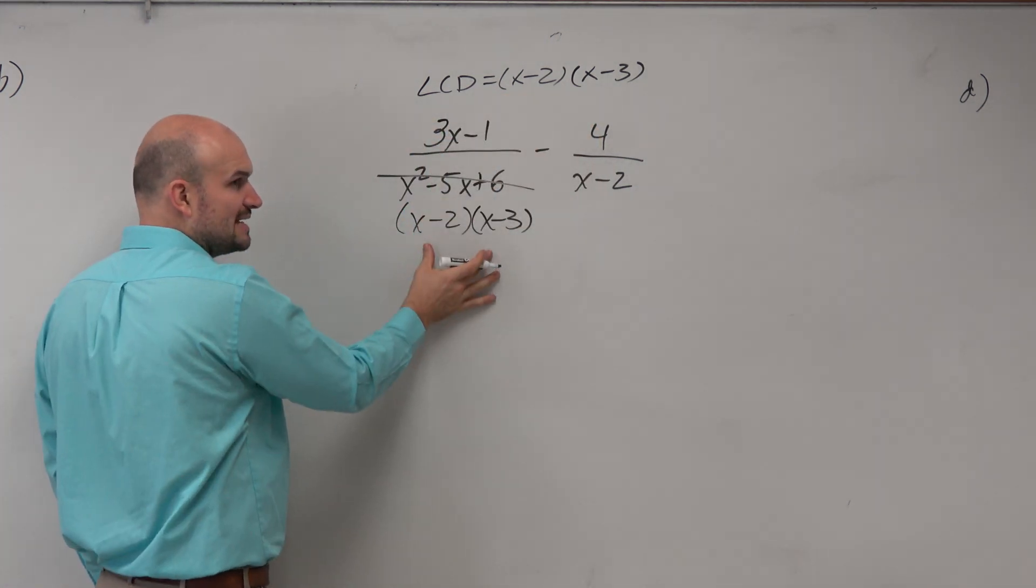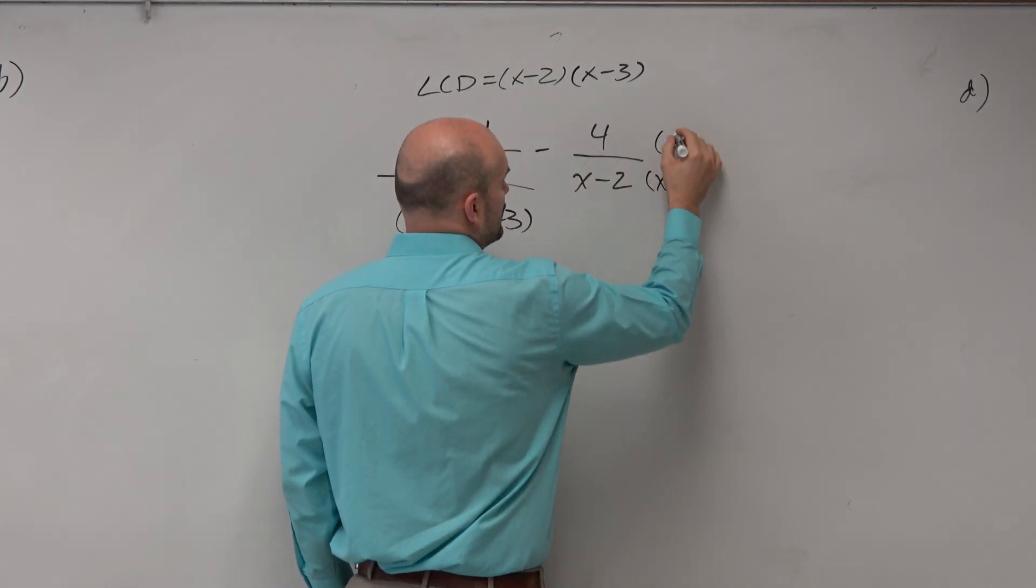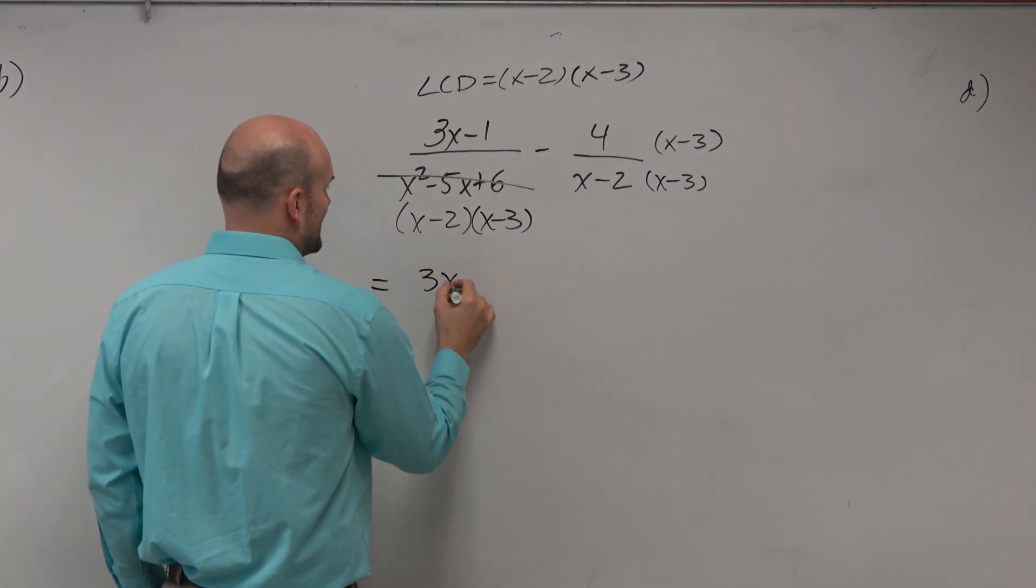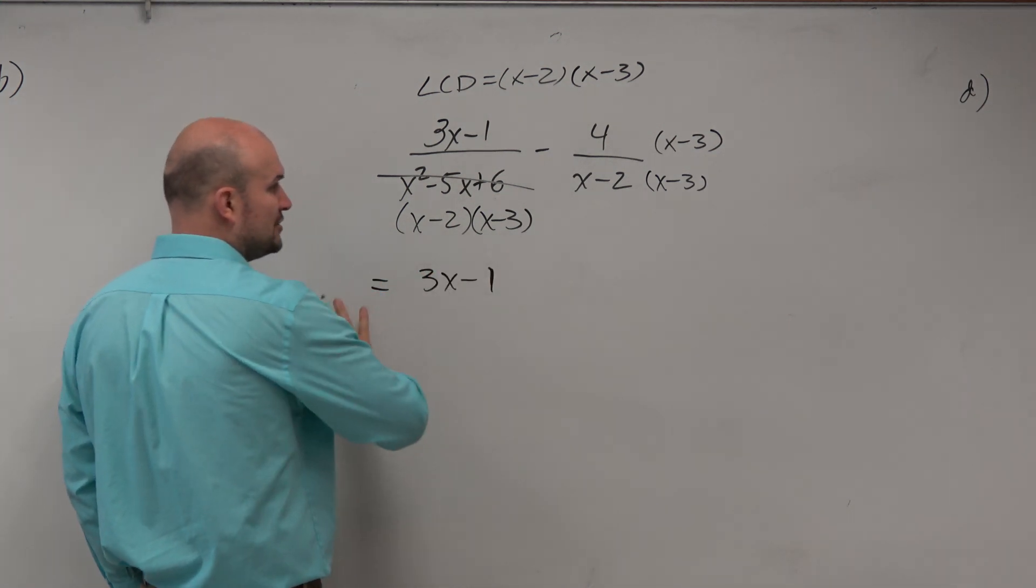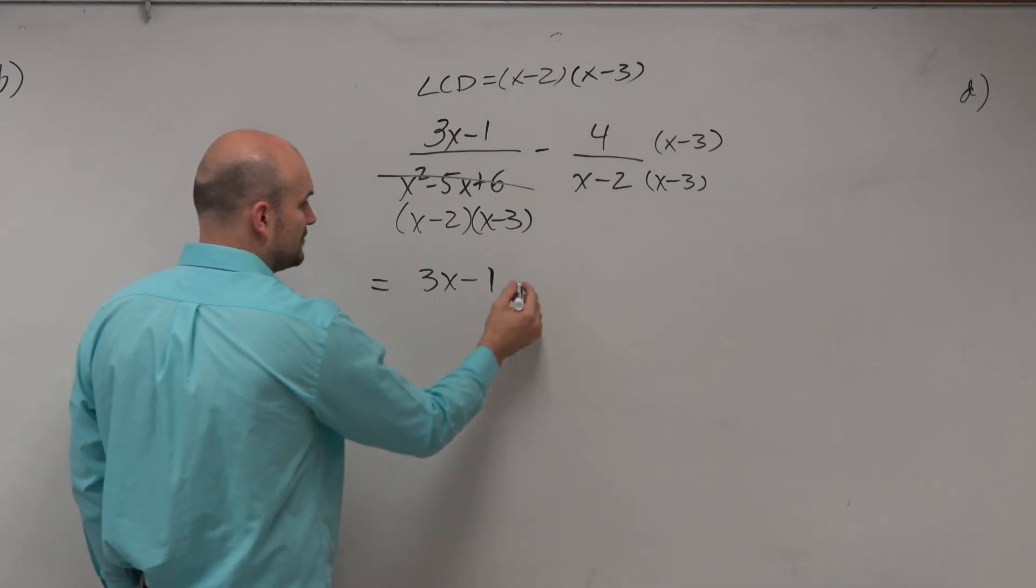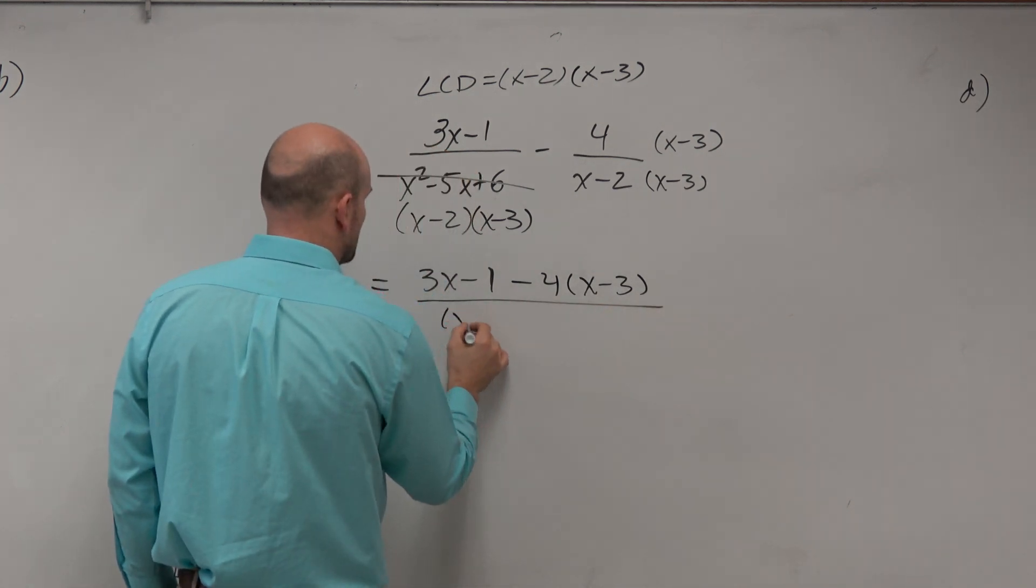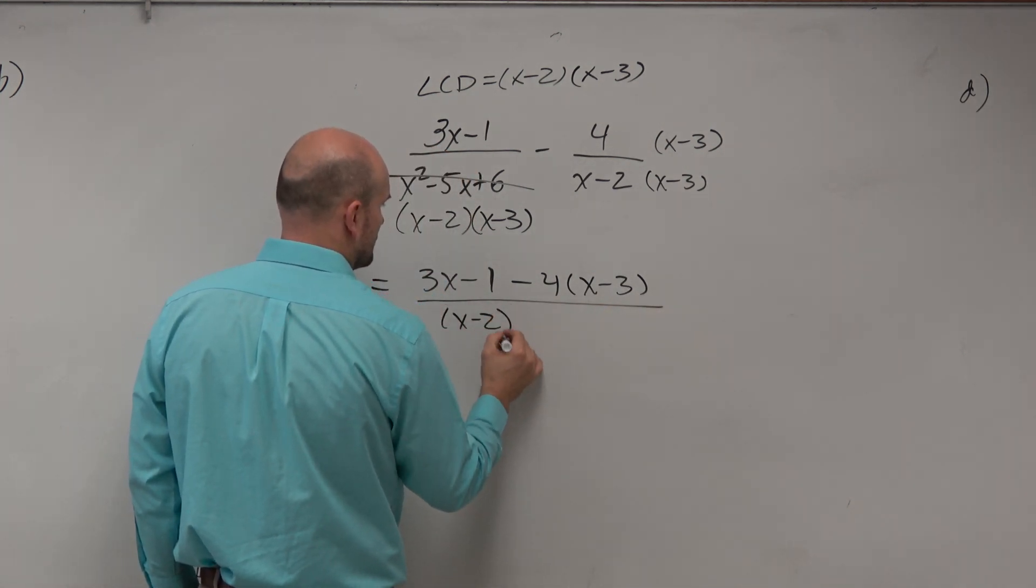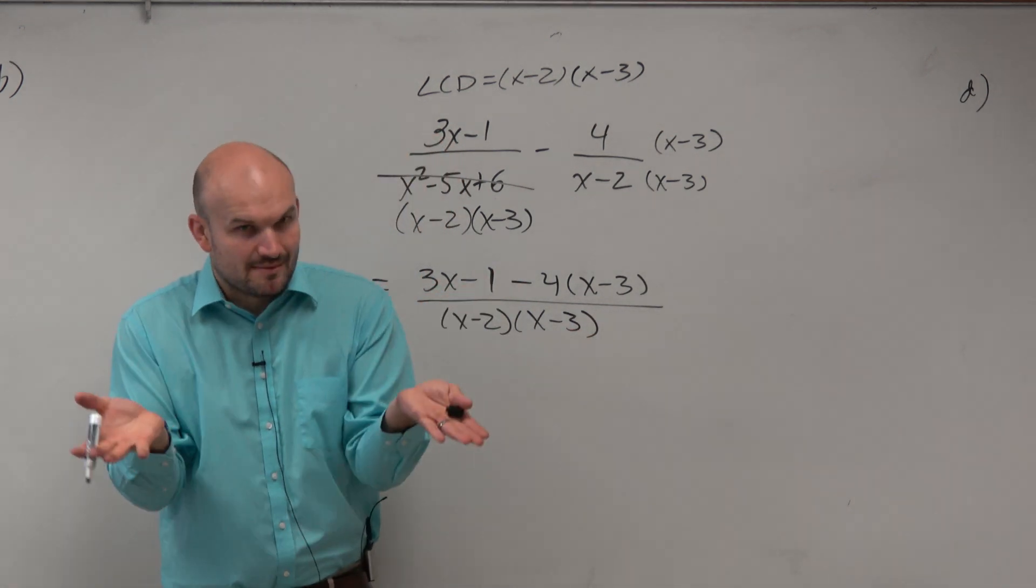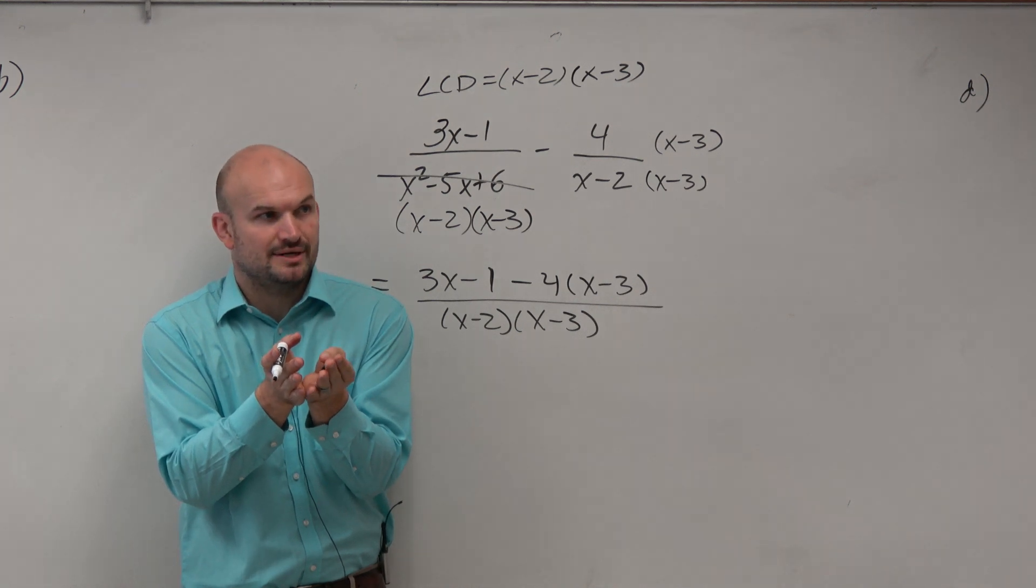So now, this is already my common denominator. So the only thing I need to do is multiply this right side by x minus 3 over x minus 3. So therefore, I have 3x minus 1. Are you guys OK with me actually just combining these together? That's one denominator minus 4 times x minus 3 all over x minus 2 times x minus 3. Because again, once they have common denominators, you can just apply the operations to the numerators under the common denominator, right?